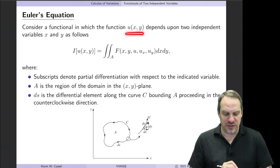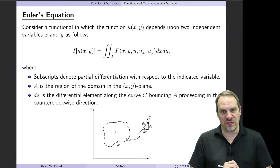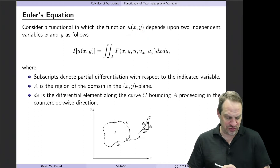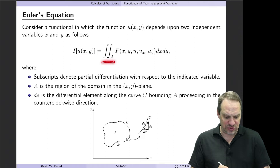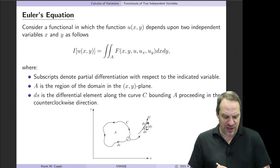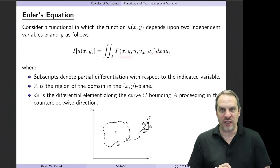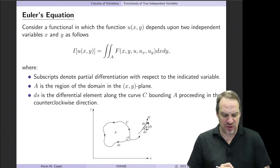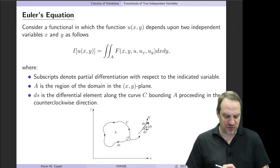We have one dependent variable u, but now it's a function of two independent variables x and y — a two-dimensional domain. Our functional i is a function of u, which is a function of x and y, so now we have an area integral over x and y. Our capital F integrand is a function of x and y, our dependent variable u, and its first derivatives u_x and u_y, which are partial derivatives with respect to x and y respectively. Subscripts indicate partial derivatives.